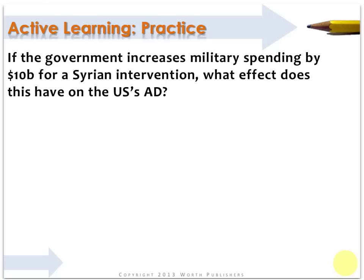Here we see a traditional multiplier-style question. We're given some information and we've got to figure out how to use it. Any multiplier question is going to rest on a basic framework. We're looking for either the impact of a government policy — like an increase in military spending — or we have a policy goal in mind, like needing to increase total aggregate demand by X amount, and we need to determine how much of an injection in government spending or cut in taxes would achieve that policy goal.